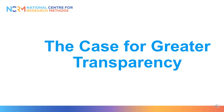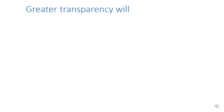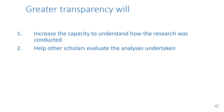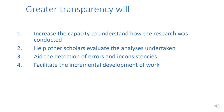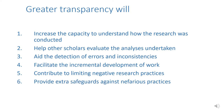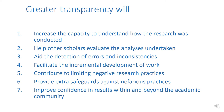The case for greater transparency. Transparency is a central tenet in reproducible research because without it research cannot feasibly be reproduced. Increasingly, transparency in statistically orientated social science research is intrinsically attractive for a number of reasons: greater transparency will increase the capacity to understand how the research was conducted; help other scholars evaluate the analyses undertaken; aid the detection of errors and inconsistencies; facilitate the incremental development of work; contribute to limiting negative research practices; provide extra safeguards against nefarious practices; and improve confidence in results within and beyond the academic community.